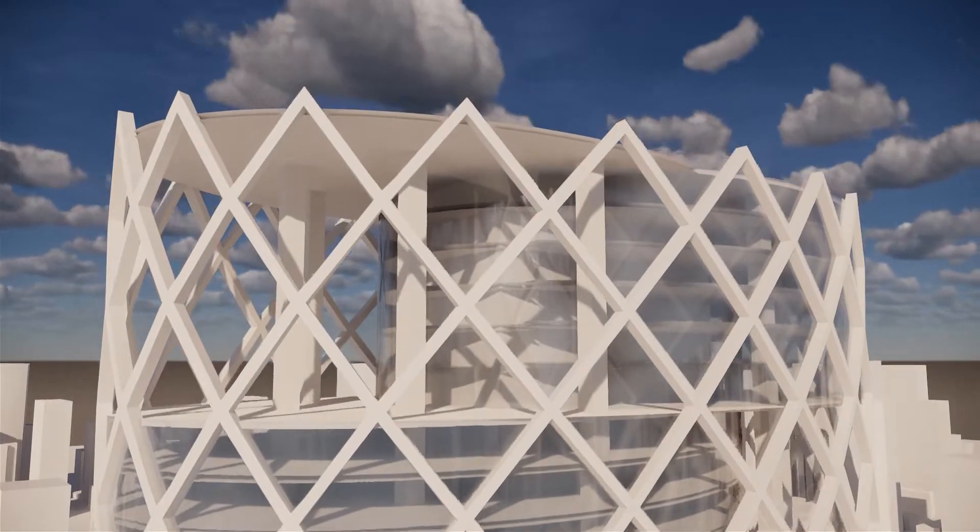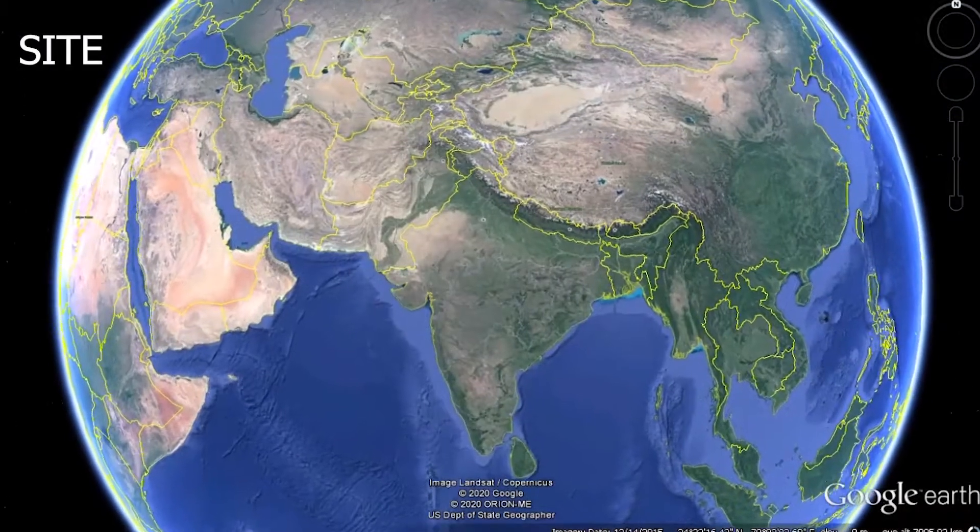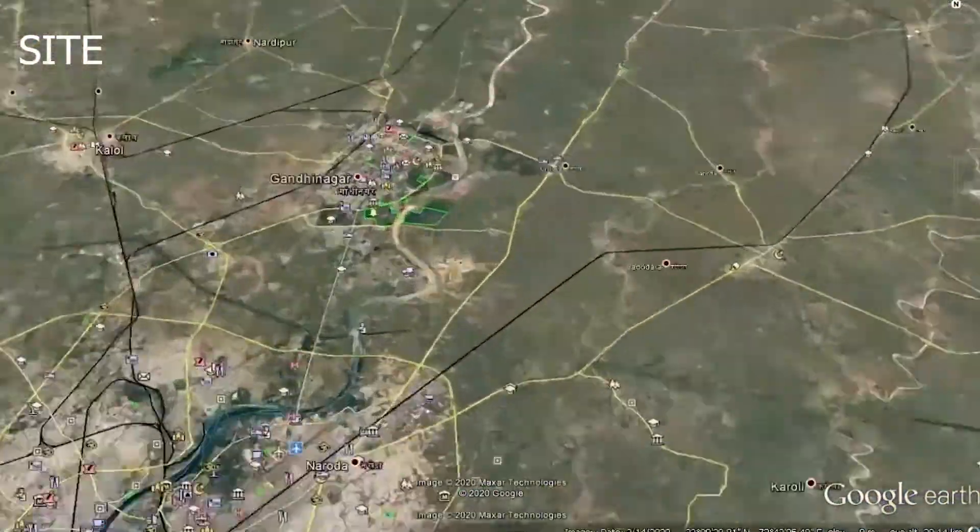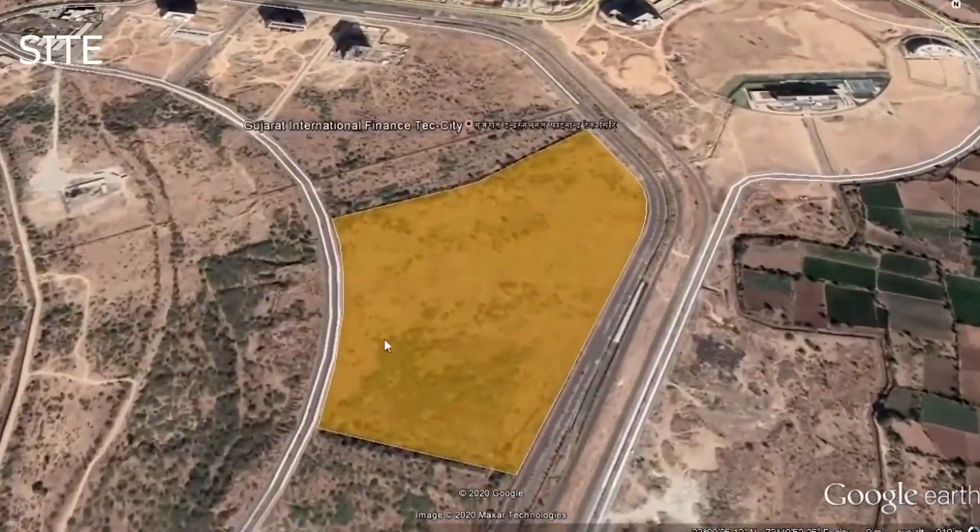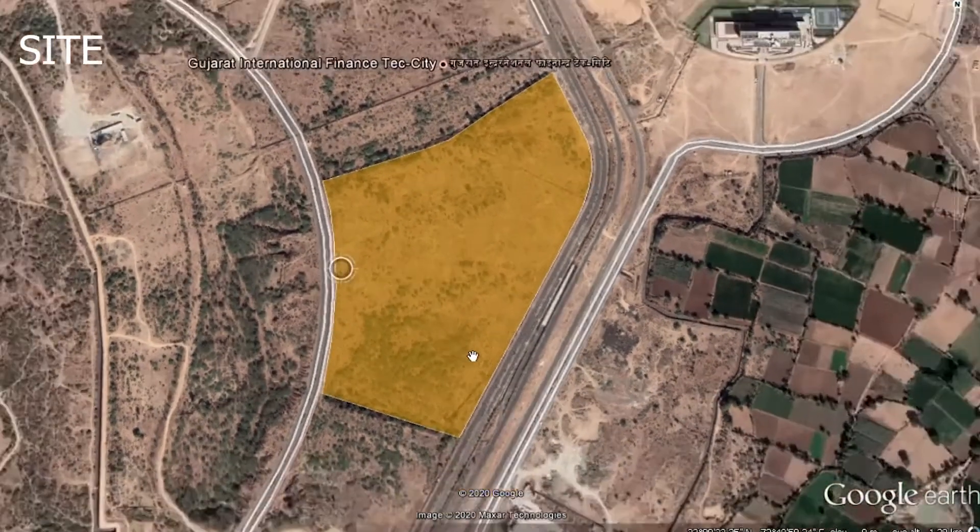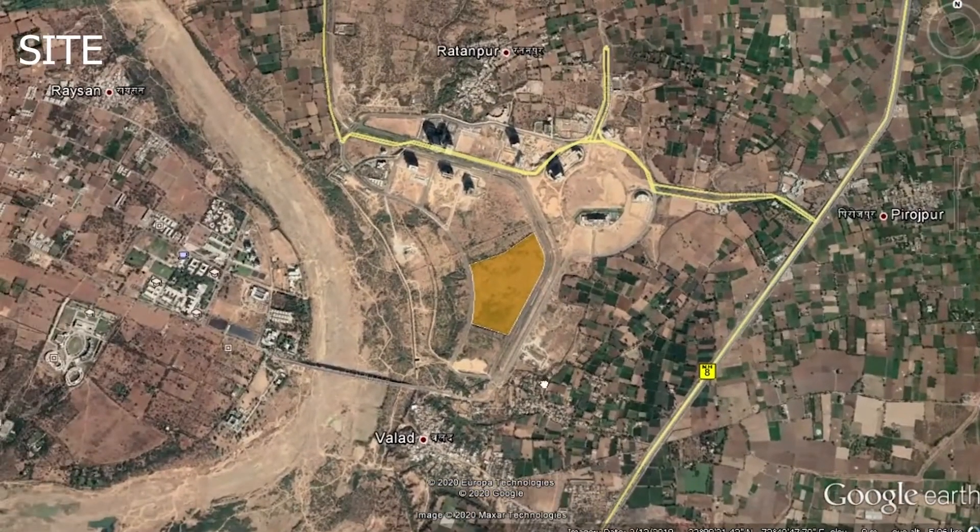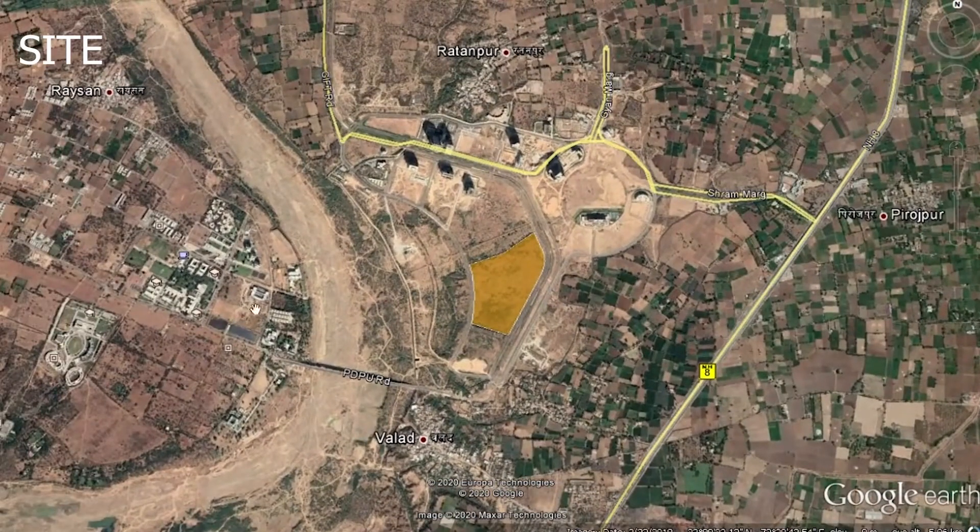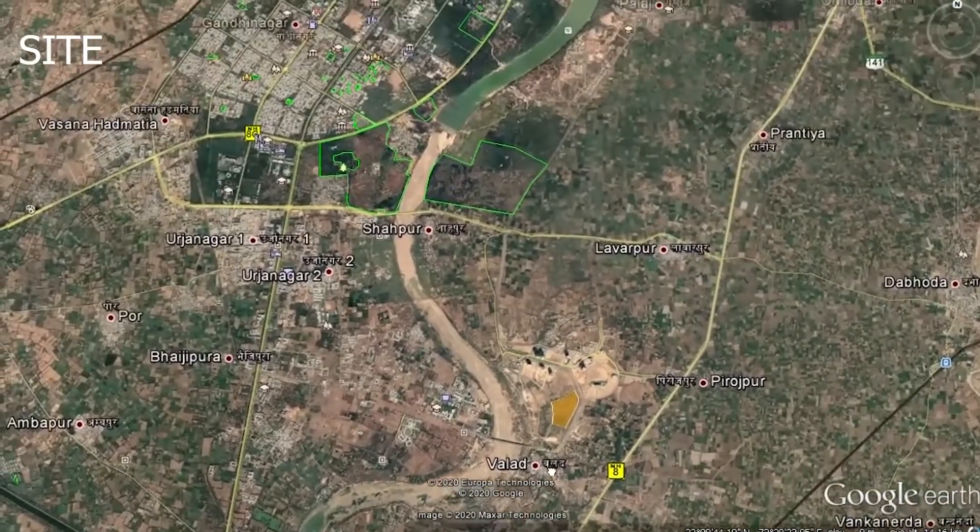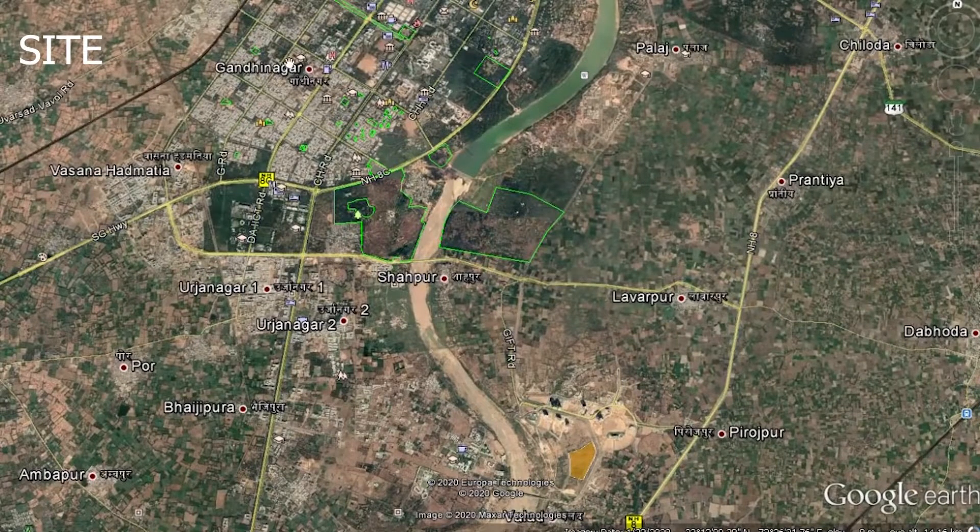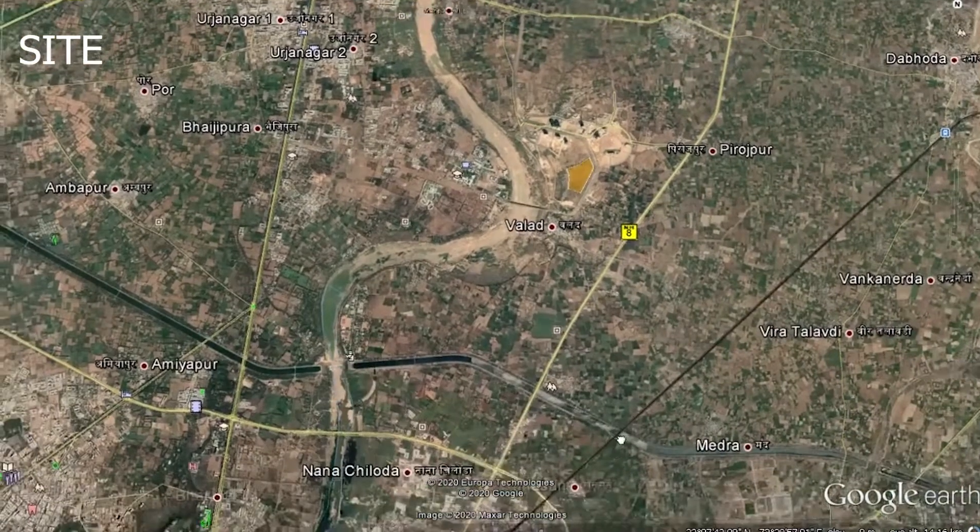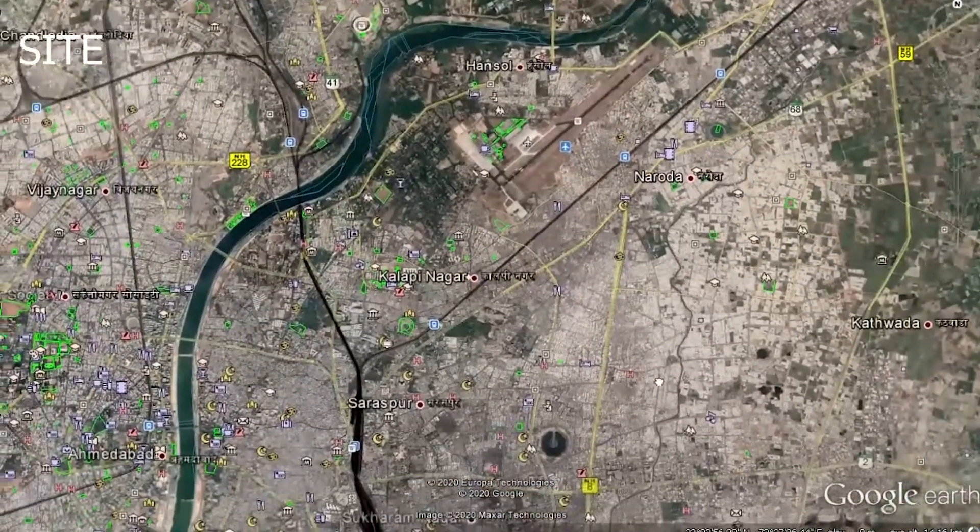Now coming to our site. The site is in Gujarat and is located on the banks of Sabarmati River. Approximately 11 kilometers away in the north is Gandhinagar, and 12 kilometers in the south is Ahmedabad.